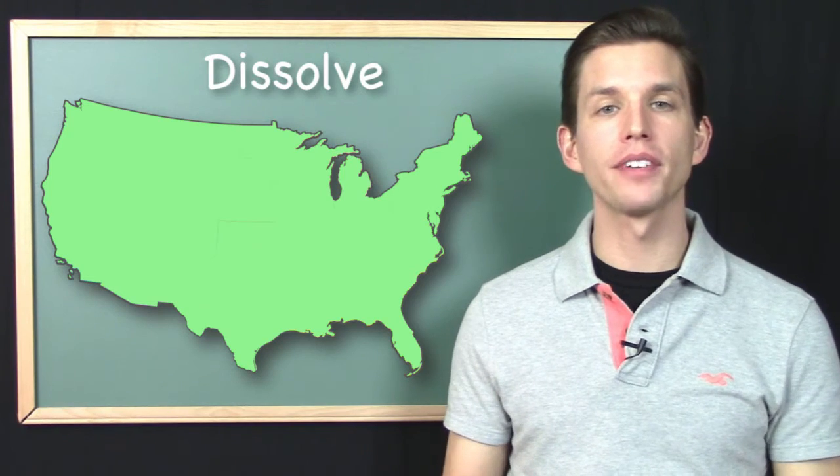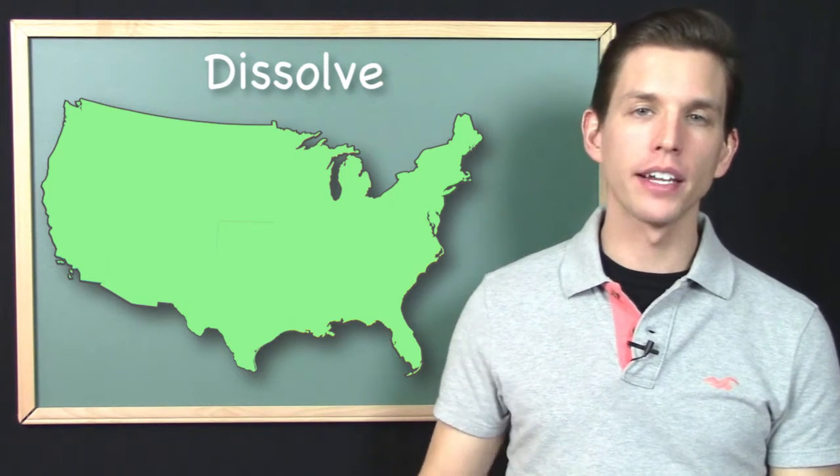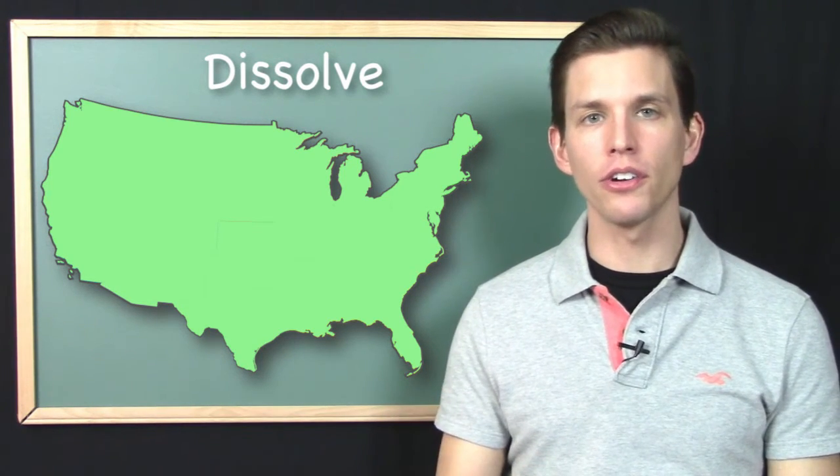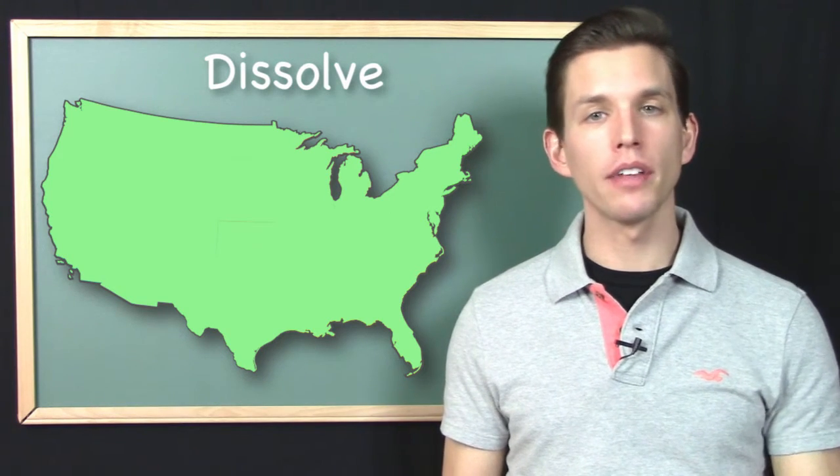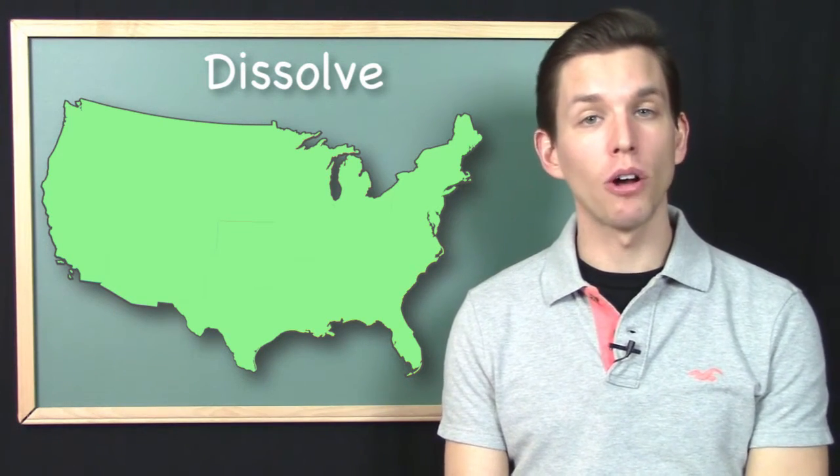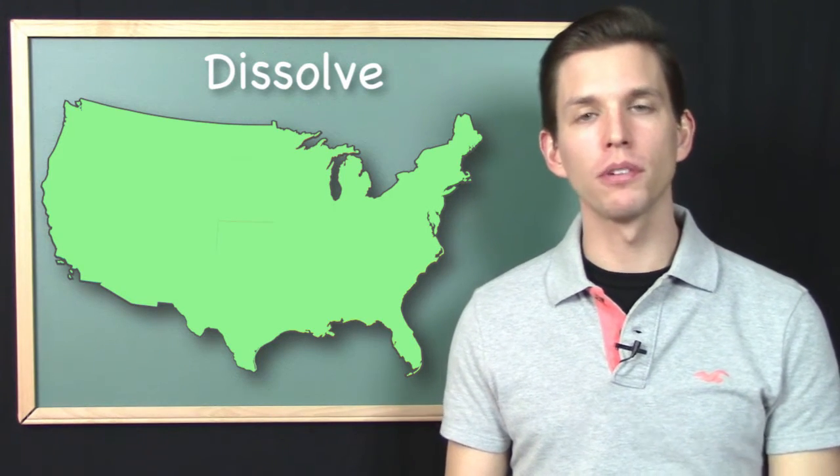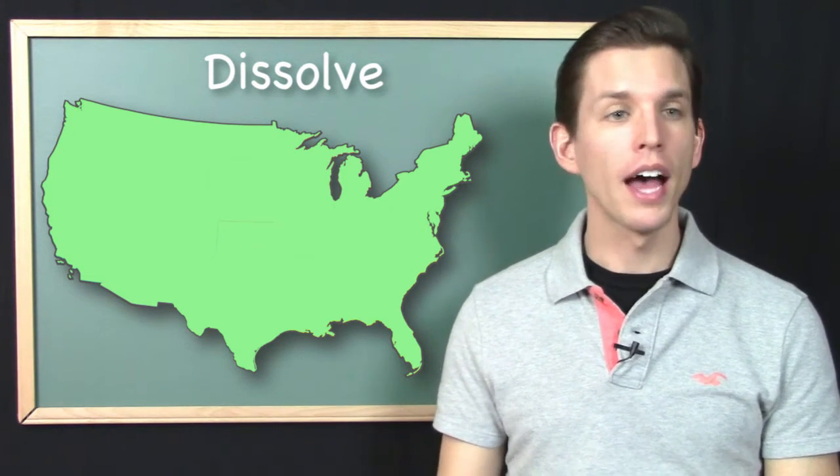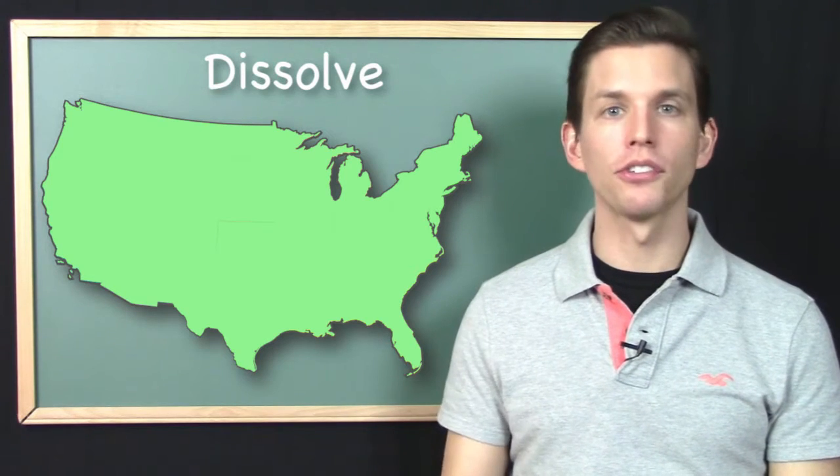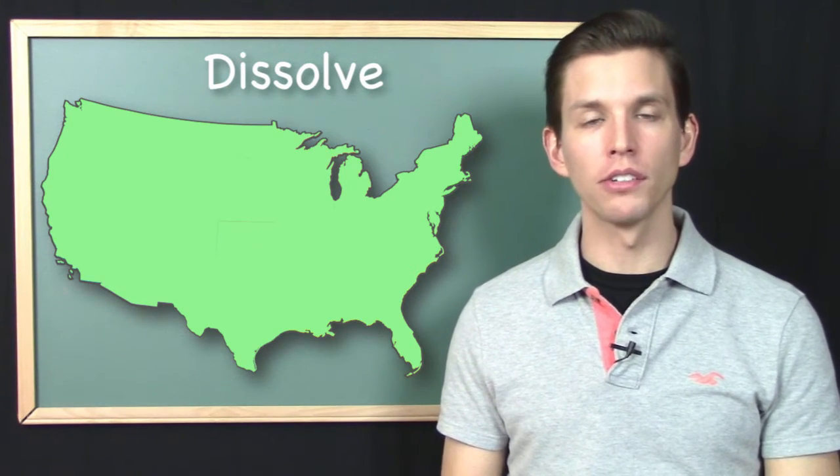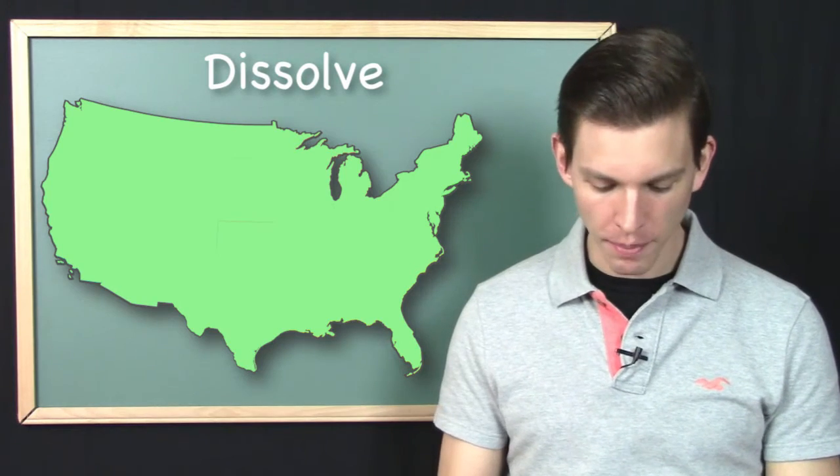So if I would like to have an outline of all of the United States but without any of the interior line work, then I can do that very easily with the Dissolve operation. I would just say Dissolve and then when it asks me which attribute field would you like to specify, I say None and then what it does is it will return that outline. It would merge all of the states into a single shape.